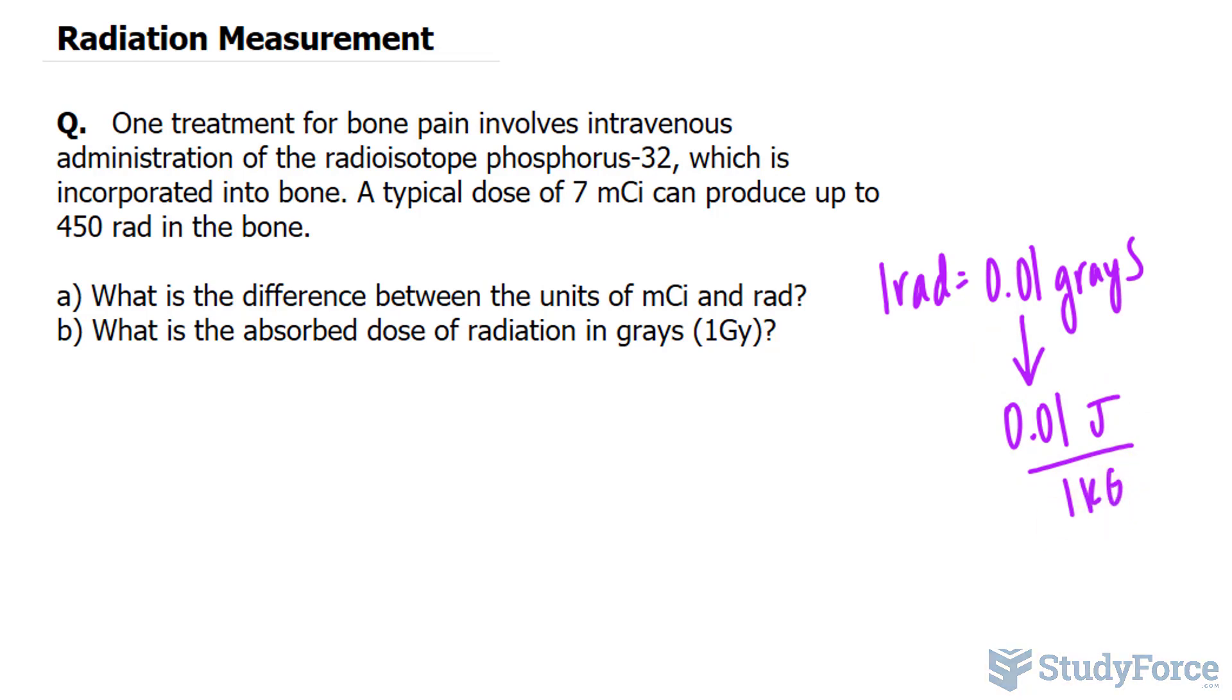So going back to the question, all they're asking us is the difference between the units of mCi and rad. Now of course you can look this up in your textbook, but we're just discussing it here. A millicurie indicates the activity of the phosphorus-32 in terms of nuclei that break down in one second, and that's quantified as 7 millicuries.